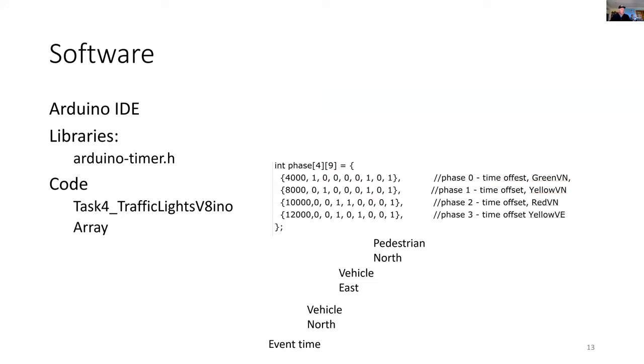In the software, I'm going to use not only the library timer but also an array that completely describes each traffic signal. In fact, the one I've got here describes the whole intersection. Starting off on the column, the first column on the left is the event time and each row is a phase. The next group is for the signal set facing north, then the signal set facing east, then the pedestrian crossing. In each of those, each column represents a traffic signal color: green, yellow and red. That repeats across each of the other traffic signal posts.